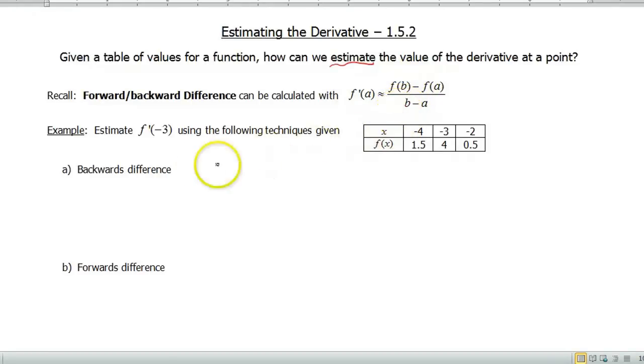The example we're going to look at today is we're going to estimate f'(-3) using the different techniques: forwards, backwards, as well as central. I've given a table of x values here as well as some values of the function at those certain points. We're going to be focusing in on -3.